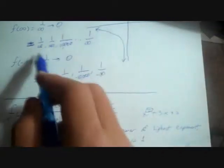Rule 1: If the degree of the numerator is less than the degree of the denominator, then we have a horizontal asymptote at y = 0. A perfect example is f(x) = 1/x — the numerator has degree 0, the denominator has degree 1 — so the horizontal asymptote is at y = 0, which we already proved.